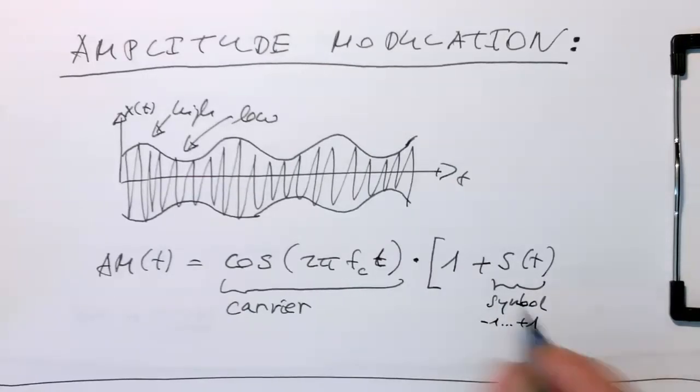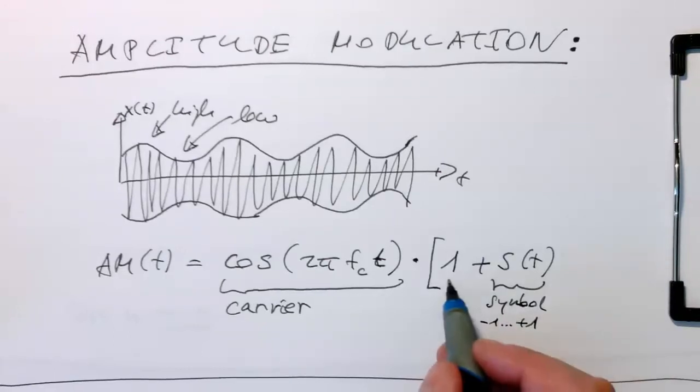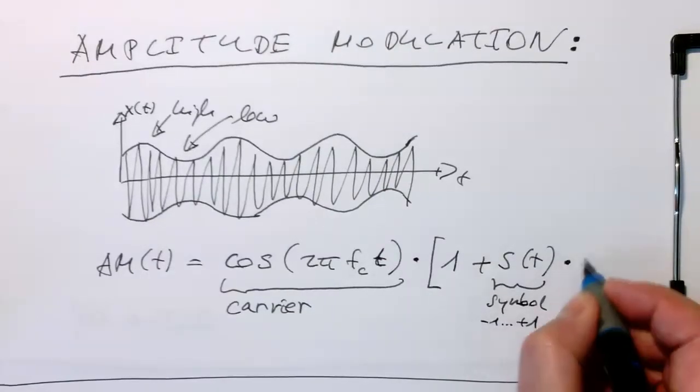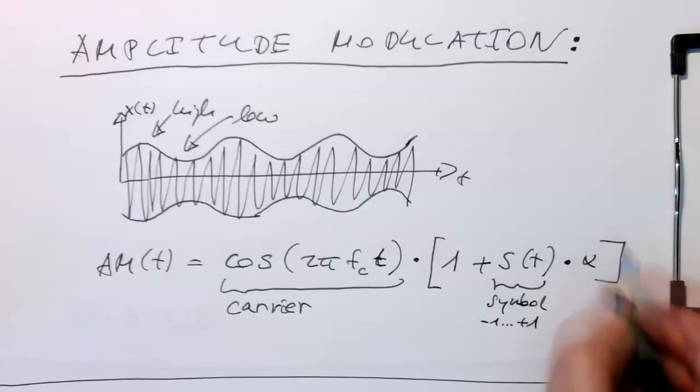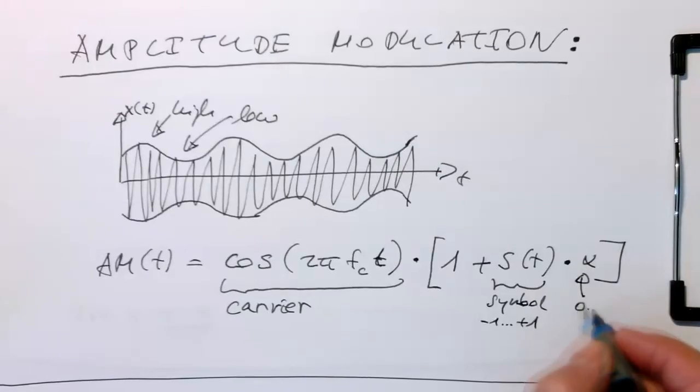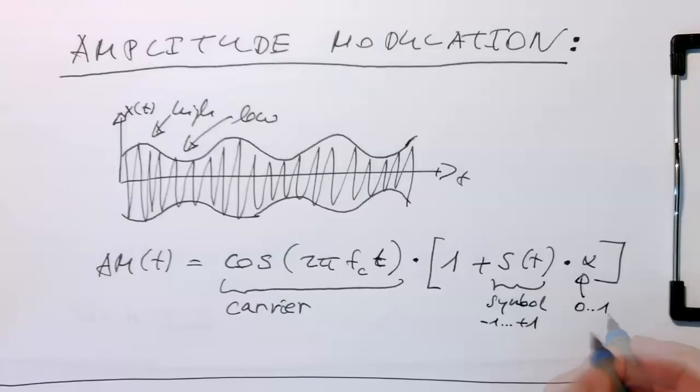Let's just assume it's running maximum from minus one to plus one. And so that this, in the worst case here, cancels this out here so that we don't get any negative values. And then we multiply this with the factor alpha. And this is called the modulation index. That's running from zero to one. So obviously the higher this is, the stronger the modulation.